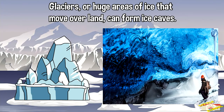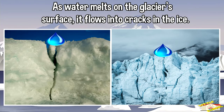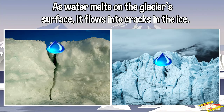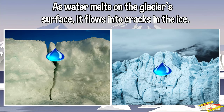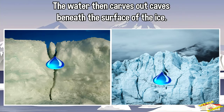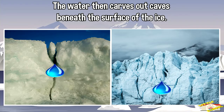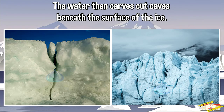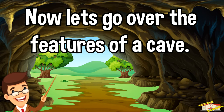As water melts on the glacier surface it flows into cracks in the ice. The water then carves out caves beneath the surface of the ice. Now let's go over the features of a cave.